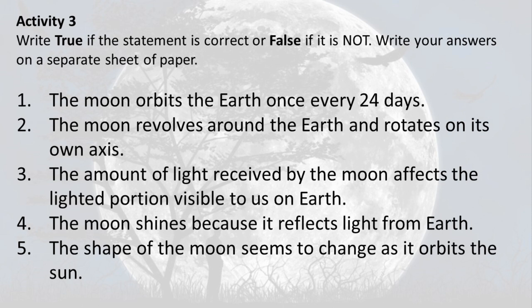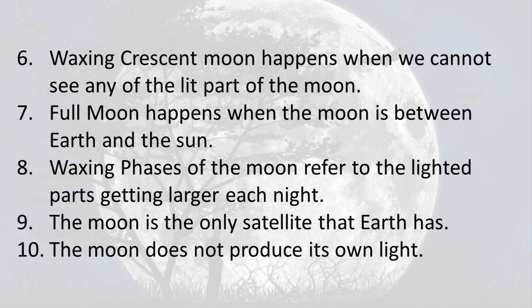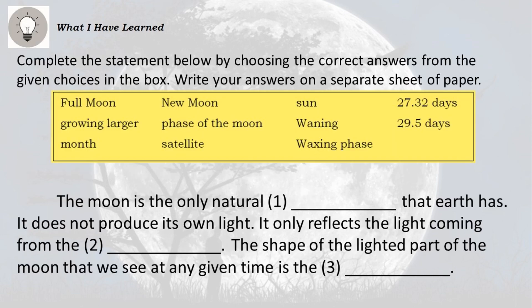Activity 3: Write true if the statement is correct or false if it is not. Write your answers on a separate sheet of paper. 1) The moon orbits the Earth once every 24 days. 2) The moon revolves around the Earth and rotates on its own axis. 3) The amount of light received by the moon affects the lighted portion visible to us on Earth. 4) The moon shines because it reflects light from Earth. 5) The shape of the moon seems to change as it orbits the Sun. 6) Waxing crescent moon happens when we cannot see any of the lit part of the moon. 7) Full moon happens when the moon is between Earth and the Sun. 8) Waxing phases of the moon refer to the lighted parts getting larger each night. 9) The moon is the only satellite that Earth has. 10) The moon does not produce its own light.